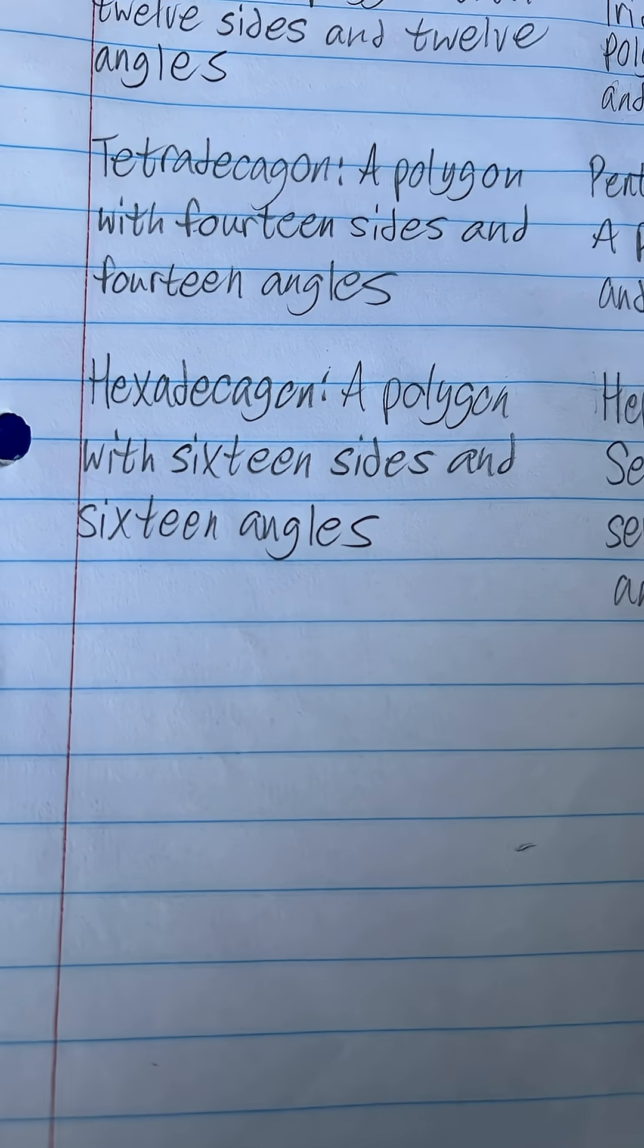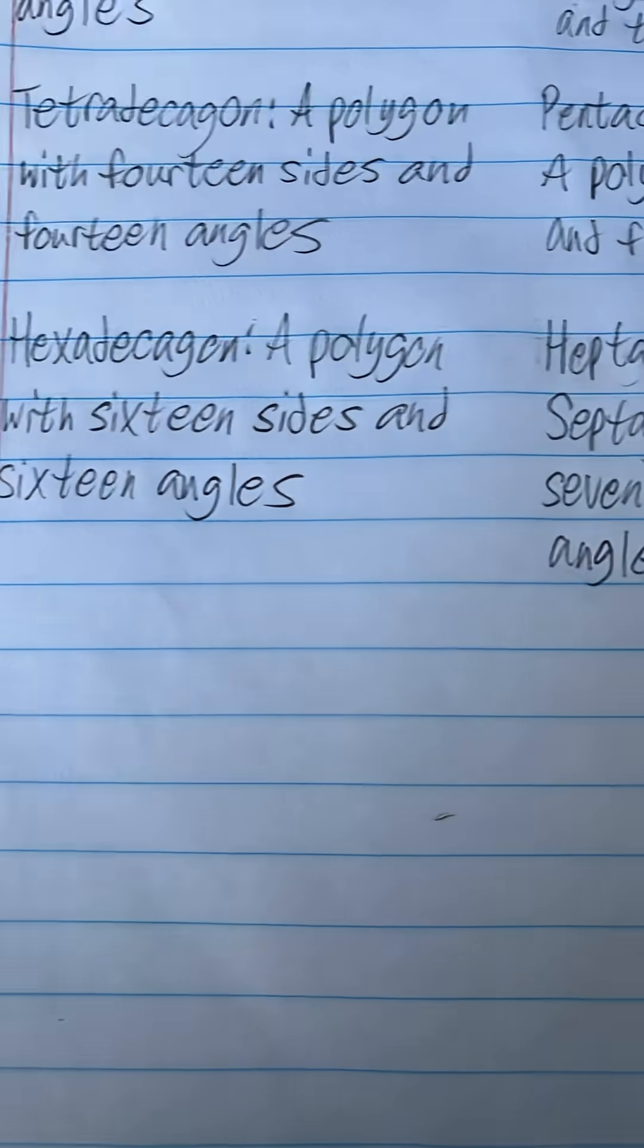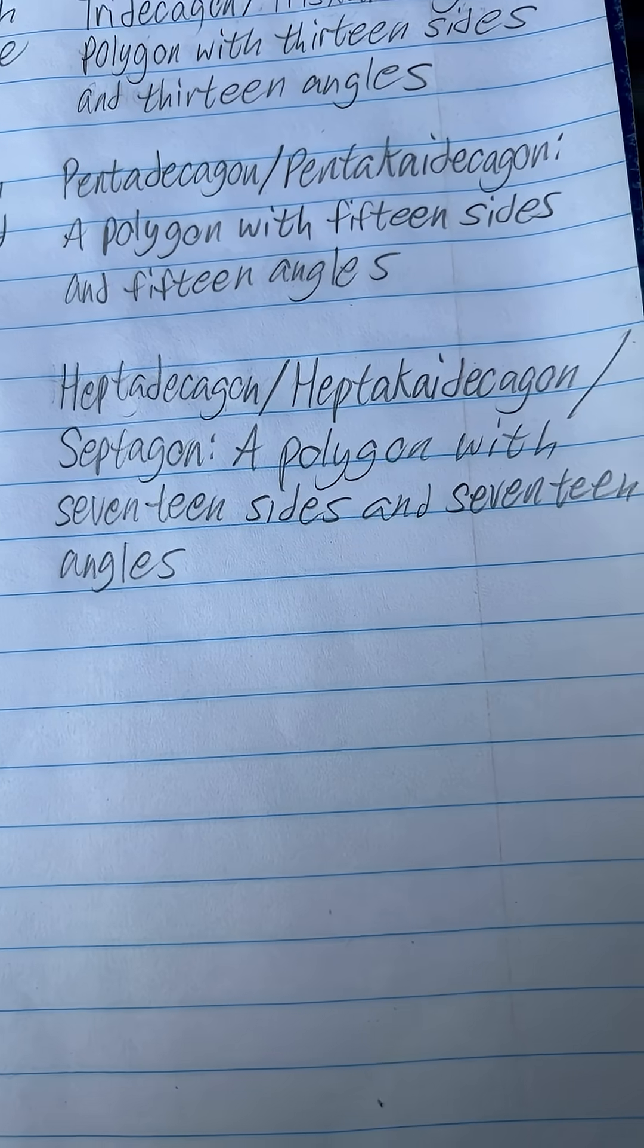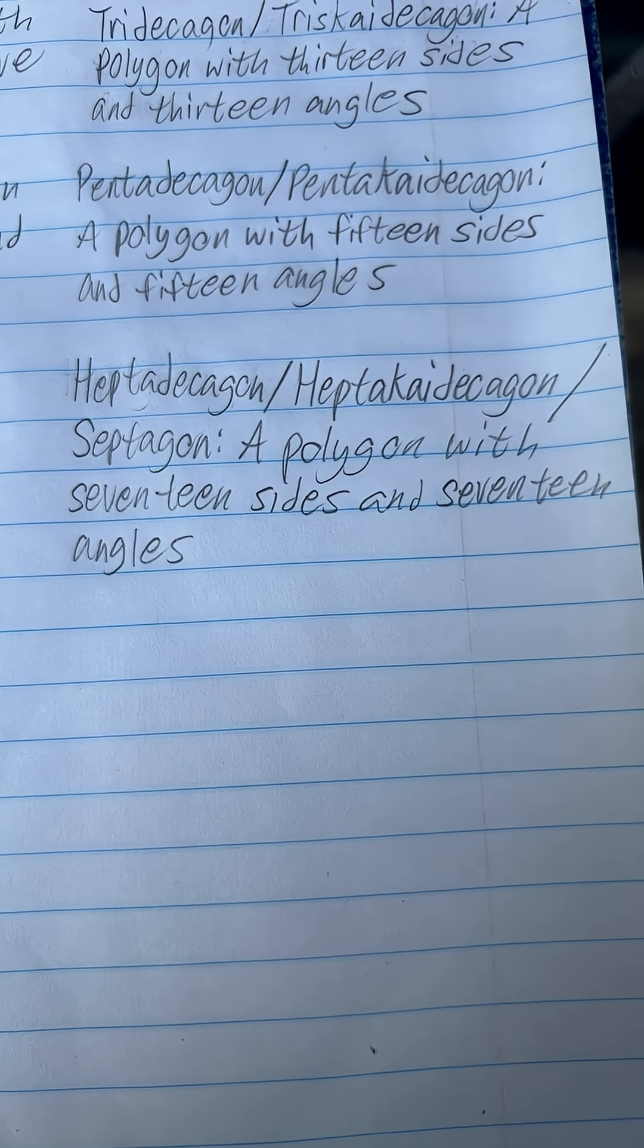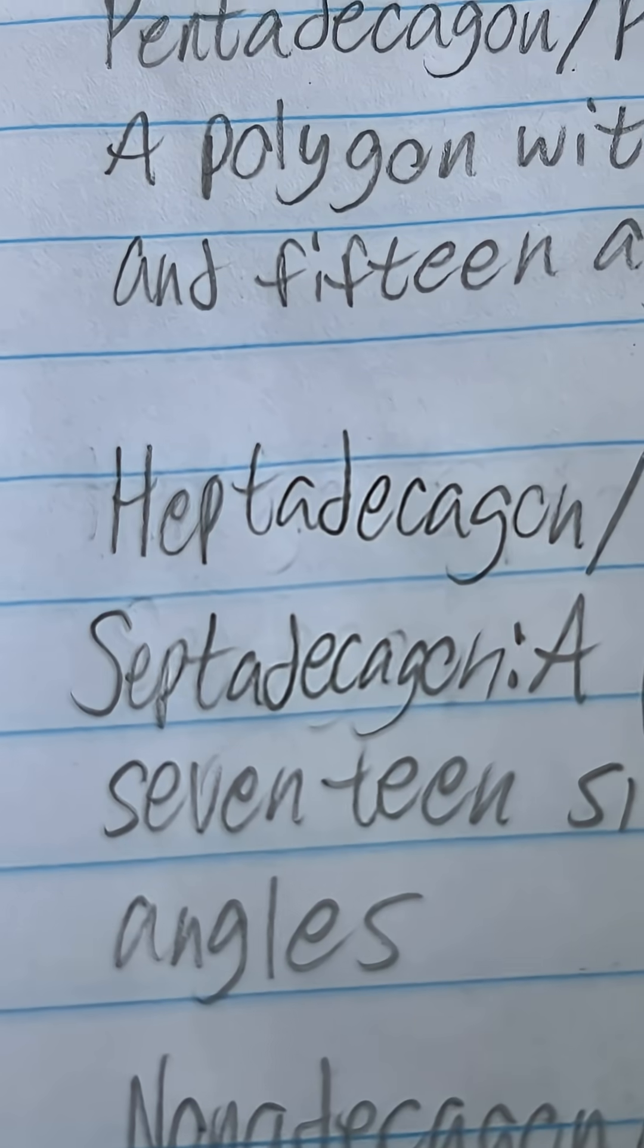A hexadecagon is a polygon with 16 sides and 16 angles. And a heptadecagon, heptakidecagon, or septagon is a polygon with 17 sides and 17 angles. I meant septadecagon.